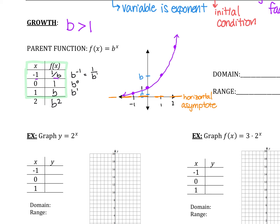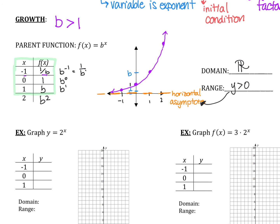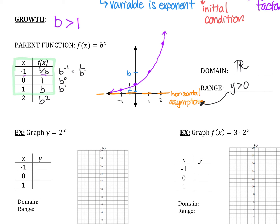Let's talk domain and range. The domain is all reals — there's nothing we can't plug in. I can plug in negative numbers and get a tiny number, huge positive numbers, or fractions. The range is based on the horizontal asymptote: in this case y is greater than 0, or written as 0 to infinity. That also works perfectly.